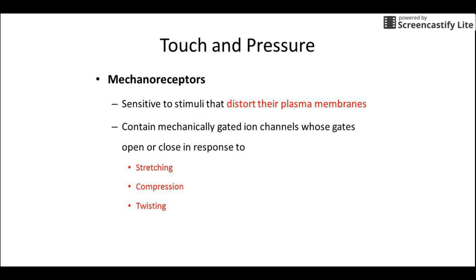Mechanoreceptors are sensitive to any time a receptor gets stretched, pushed, crushed, compressed, or twisted — essentially they are mechanically gated channels that pop open, reach threshold, and fire. The main locations are your skin and joints, but they're found all over the body, including the walls of blood vessels where they can detect when a blood vessel gets stretched.